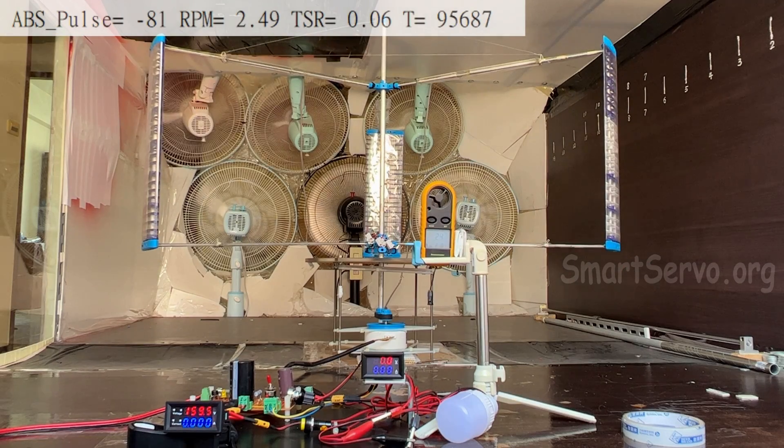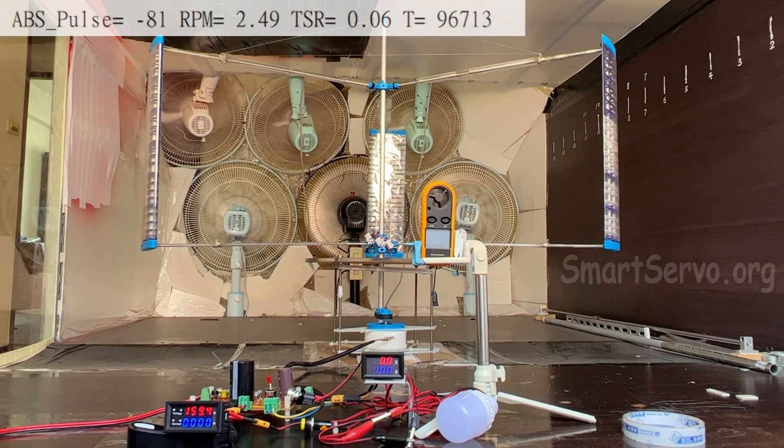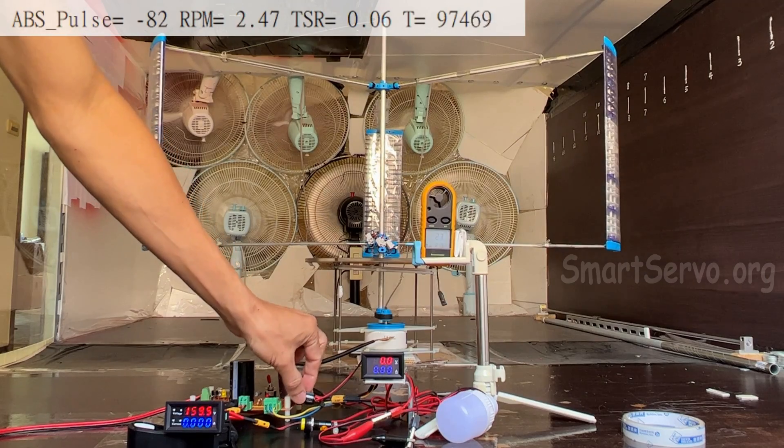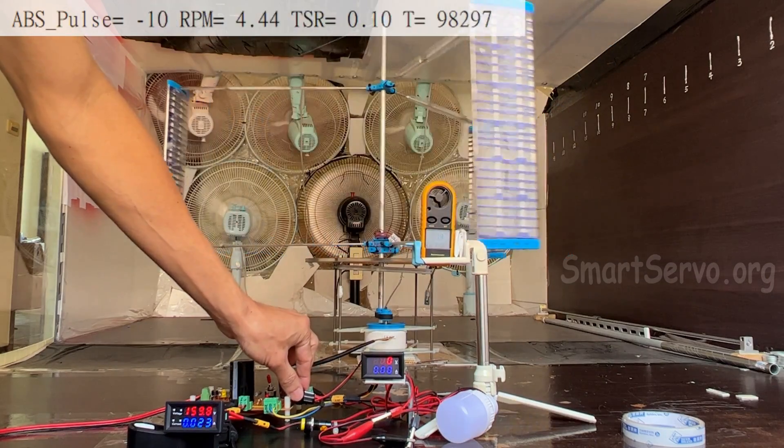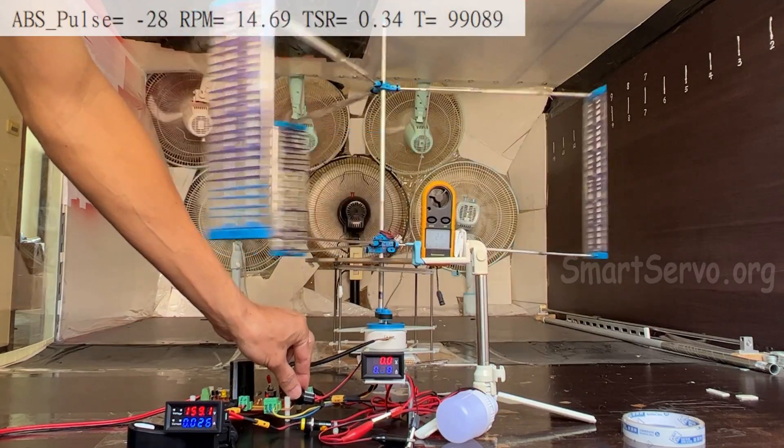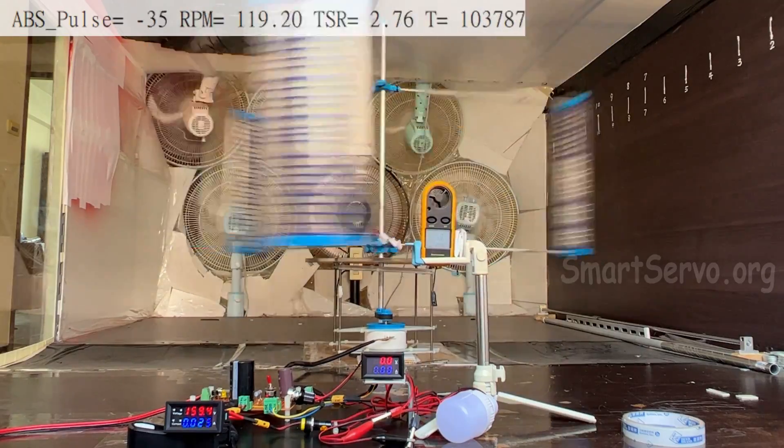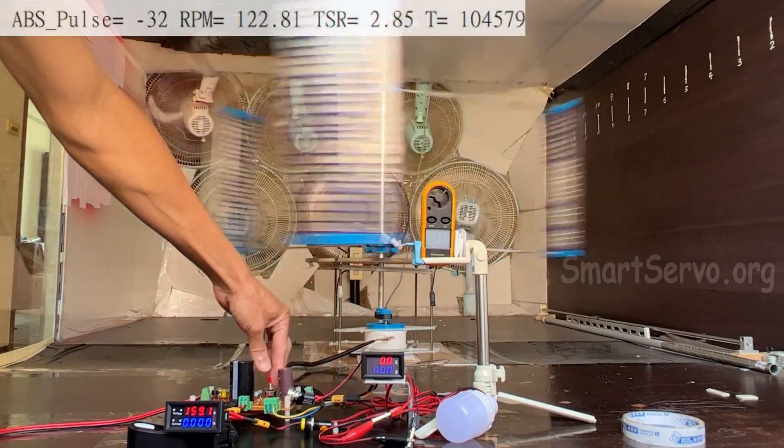Start testing. The wind speed is about 2.2 meters per second, and the wind turbine cannot start by itself. Switch is in motor mode. Turn the variable resistor to start the motor to drive the wind turbine rotate. The wind turbine continues to accelerate. After a while, when the speed exceeds 120 RPM, stop motor, switch to neutral mode.